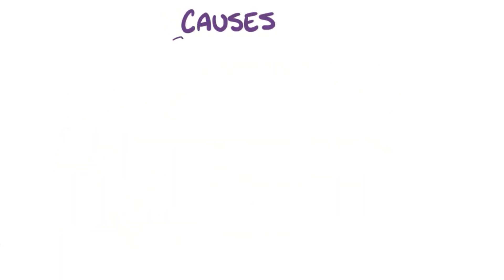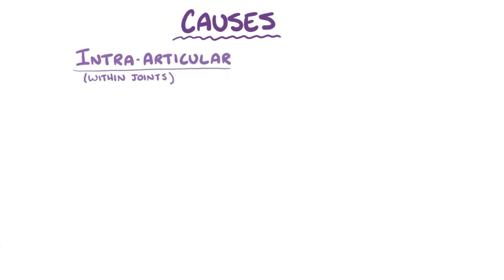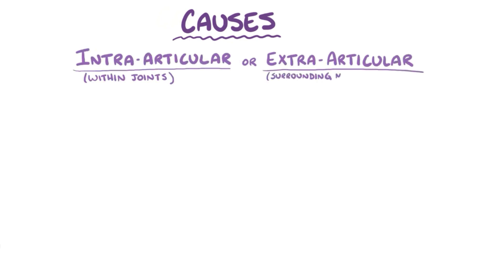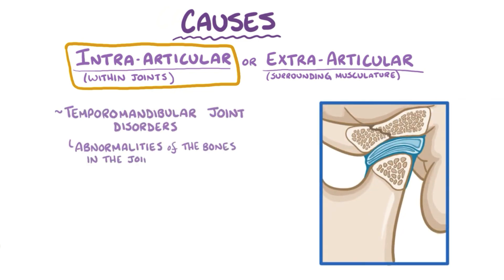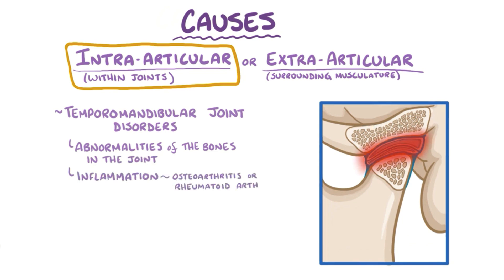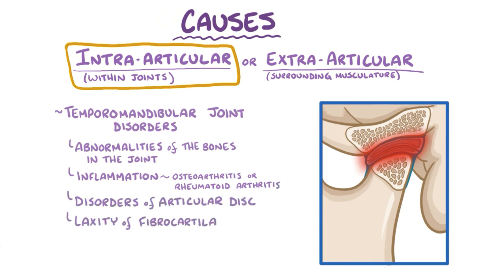The causes of temporomandibular disorders can be categorized as intraarticular, within the joint, or extraarticular, involving the surrounding musculature. Intraarticular causes are called temporomandibular joint disorders, and they include abnormalities of the bones in the joint, inflammation from conditions like osteoarthritis or rheumatoid arthritis, disorders of the articular disc, laxity of the fibrocartilage allowing for temporomandibular hyper- or hypomobility, or trauma that might result in structural damage or bleeding inside the joint.